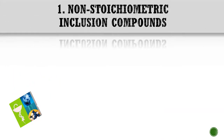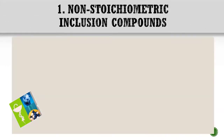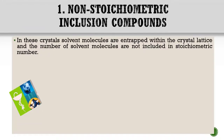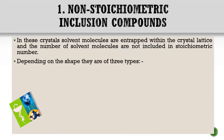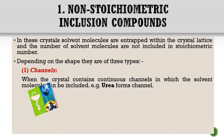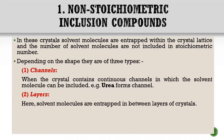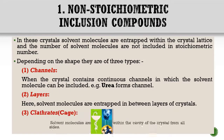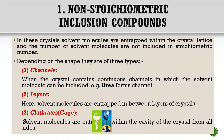Coming to Non-stoichiometric inclusion compounds: in these crystals, solvent molecules are entrapped within the crystal lattice and the number of solvent molecules are not included in stoichiometric number. Depending on the shape, they are of three types: Channels, Layers, and Clathrates or cage-like structures.